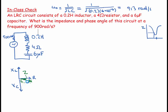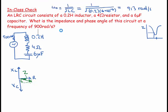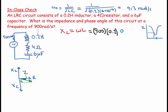The inductive reactance equals omega times L. In this case, that equals 900 times 0.2, which gives 180 ohms.